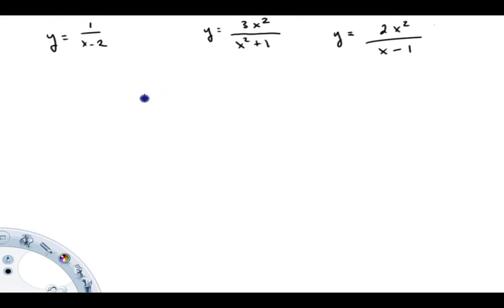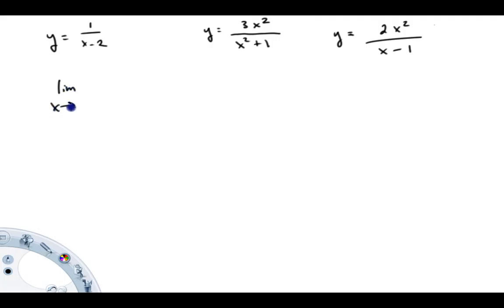So we'll start with the easy one here: y equals 1 over (x minus 2). The top is one power lower than the bottom, so this thing is going to have a horizontal asymptote. Technically you find it by taking the limit as x goes to infinity of 1 over (x minus 2).